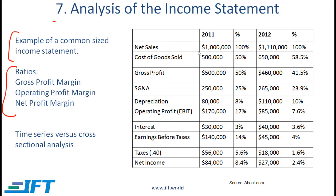In 2011, the company had net sales of 1 million, so 1 million as a percentage of 1 million is 100%. Cost of goods sold is 500,000. This is 50% of the net sales, and so on. The advantage of doing a common-sized income statement is that you can look at every item and see that item as a percentage of sales.